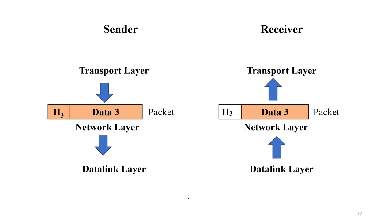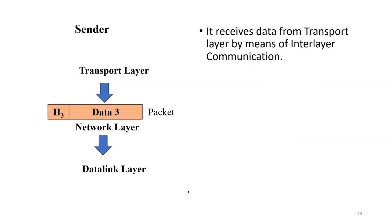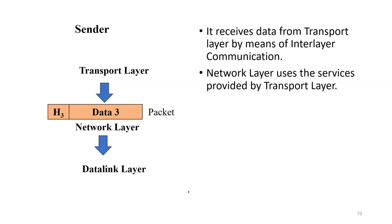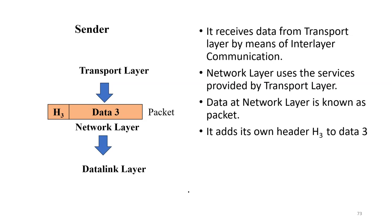Here is a diagram of the network layer. At the sender side, the network layer receives data from the transport layer and sends data to the data link layer. The network layer receives data from the transport layer, which is the upper layer, by means of interlayer communication — the network layer uses the services provided by the transport layer. The data received at the network layer is known as packets. The network layer adds header H3 to data D3 and sends the complete packet to the lower layer, the data link layer, by means of interlayer communication.